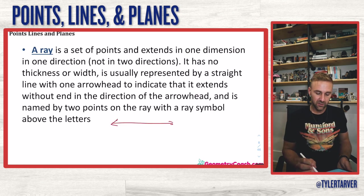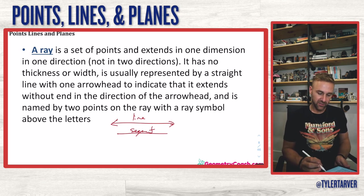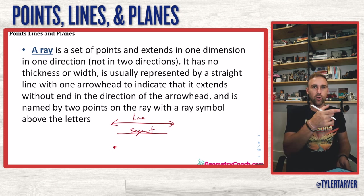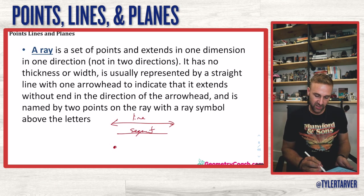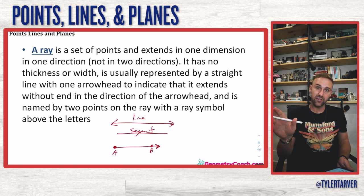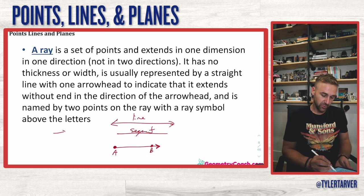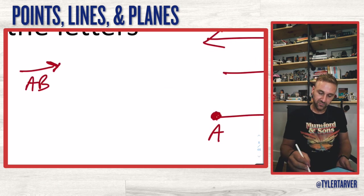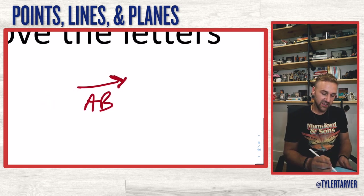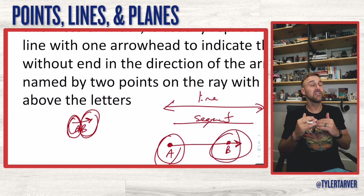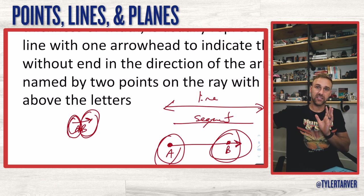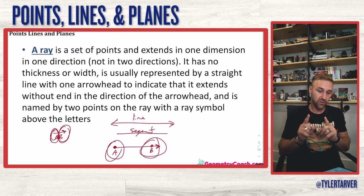A ray is like half line, half segment. When you think of a ray gun — it has a starting point and then it goes forever. One side is a point where it stops, and then it goes through forever the other way. That's what's called a ray. When labeling, it's important to put the starting point letter first and the arrow over the side that goes forever, to indicate which side keeps going and which side stops.